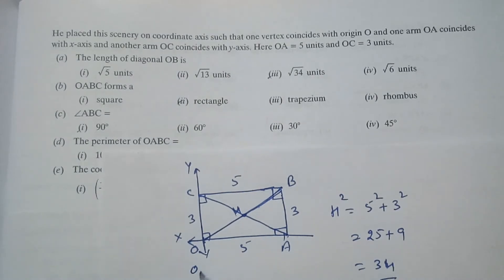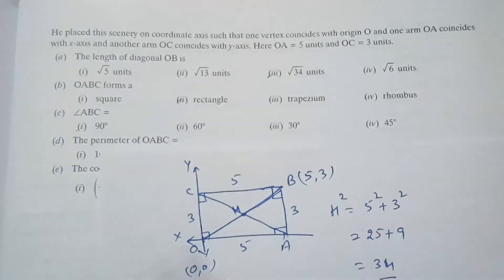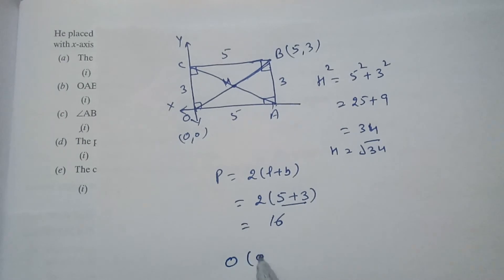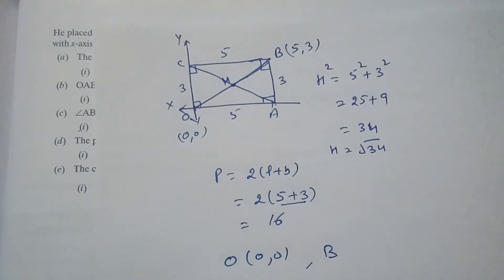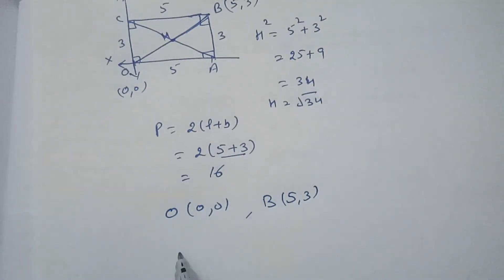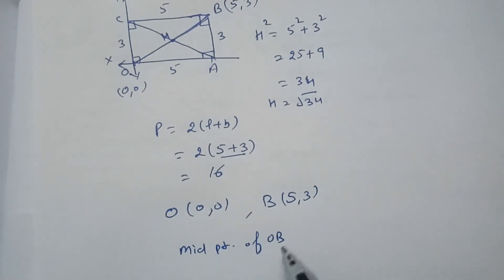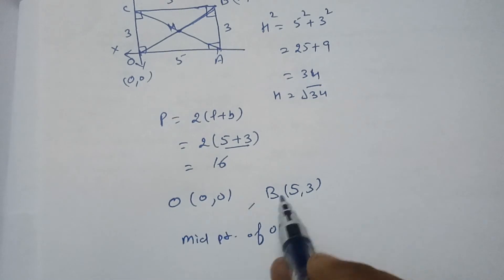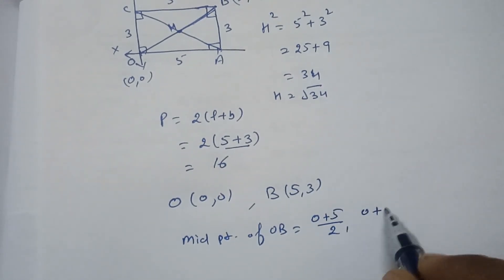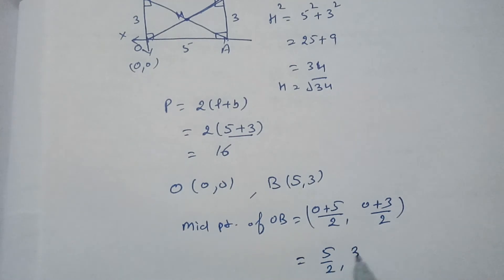So if we see here the coordinates. The coordinates of O are 0, 0 and coordinates of B will be 5, 3. So we will find the midpoint. So we will write here coordinates of O are 0, 0 and coordinates of B are 5, 3. So midpoint of OB and AC because both will be same. So it is x1 plus x2 by 2 and y1 plus y2 by 2. So this is the formula for midpoint. So which is 5 by 2 and 3 by 2.